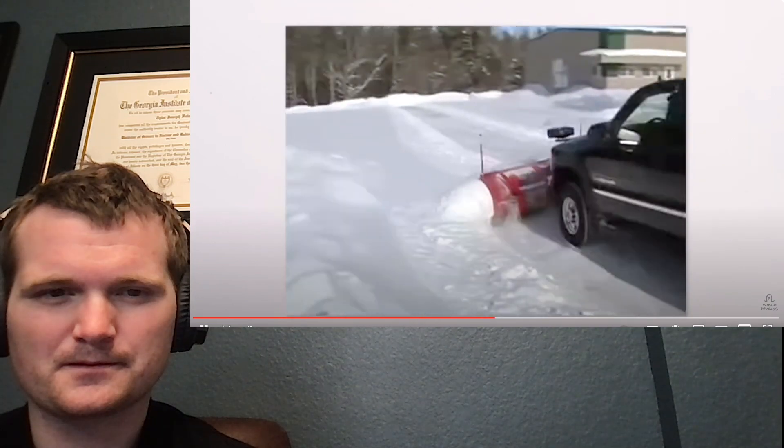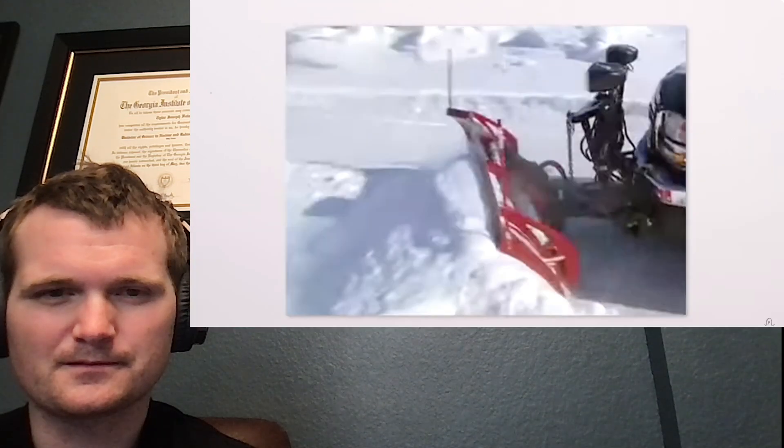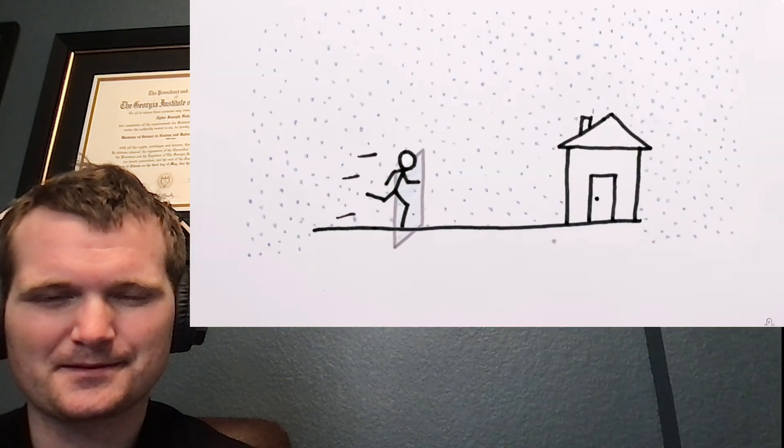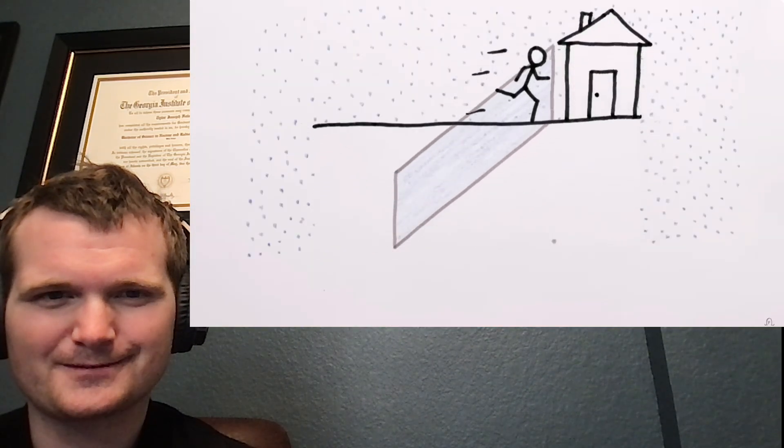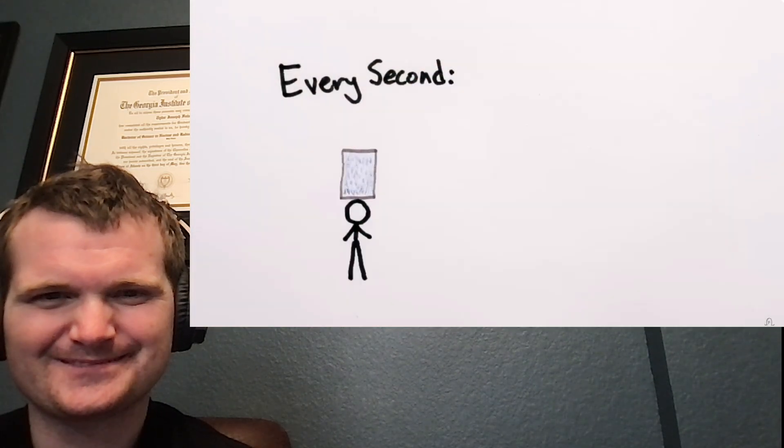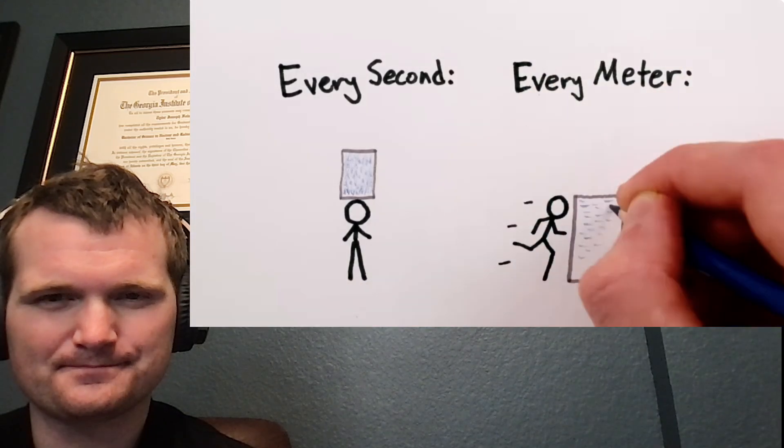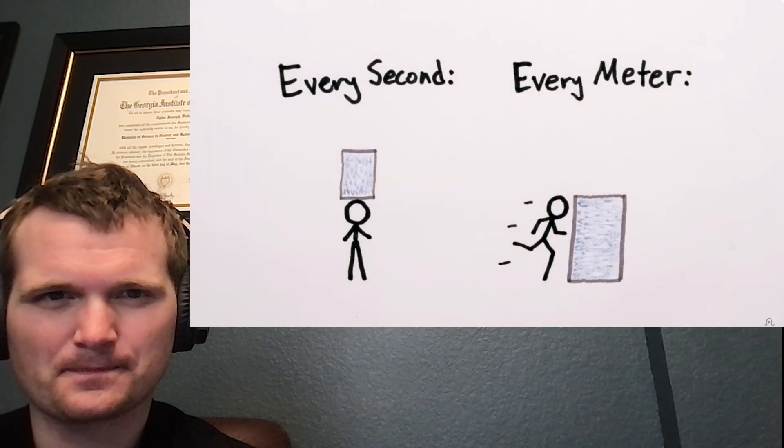It's like how a snowplow will plow the same amount of snow from a stretch of road regardless of the exact speed it drives. Well, that's a good analogy. In the case of running through the rain, you can figure that out using parallelopipeds again. So over a given period of time, the same amount of rain will hit you from the top, regardless of how fast you're going. And over a given distance, you'll hit the same amount of rain from the side, again, regardless of how fast you're going.